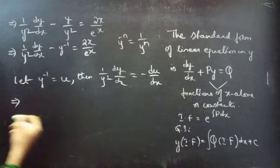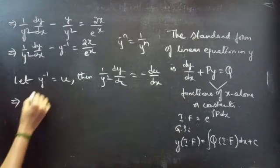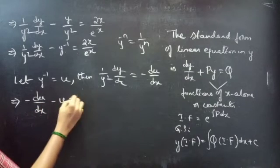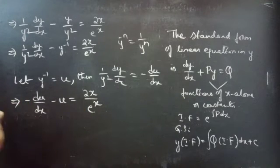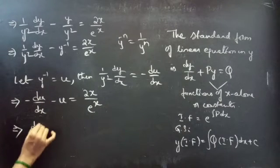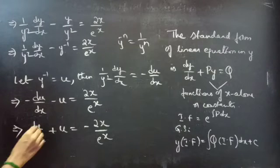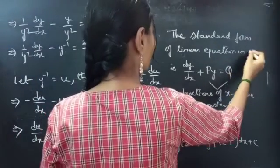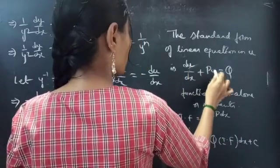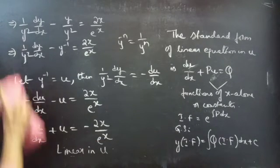Now we'll write the equation in terms of u and x by replacing the first term with -du/dx and y^(-1) with u: -du/dx minus u equals 2x/e^x. Multiplying both sides by minus 1 to make the du/dx term positive: du/dx plus u equals -2x/e^x, which is linear in u.